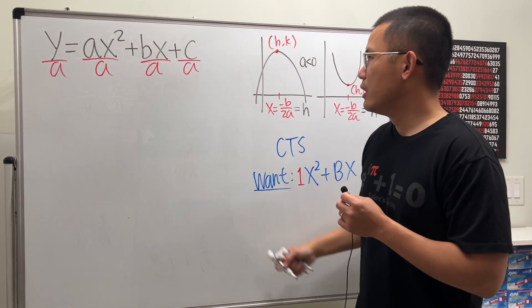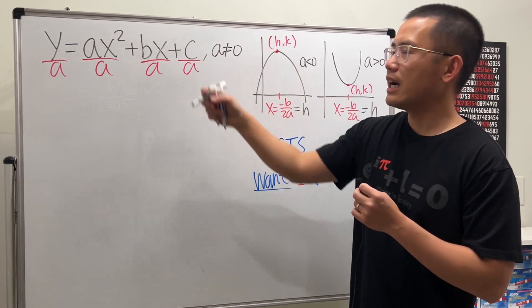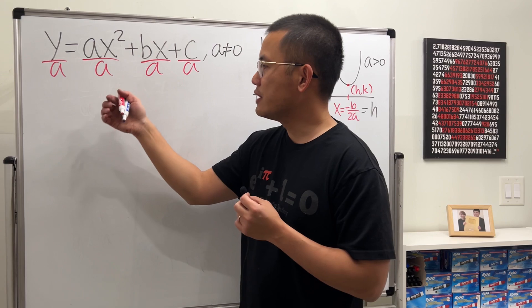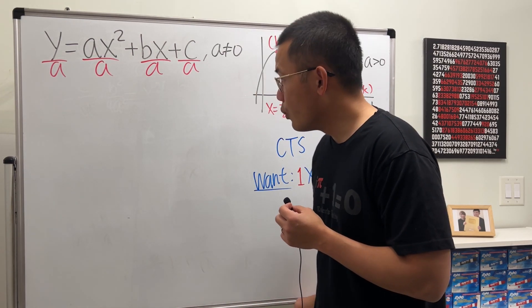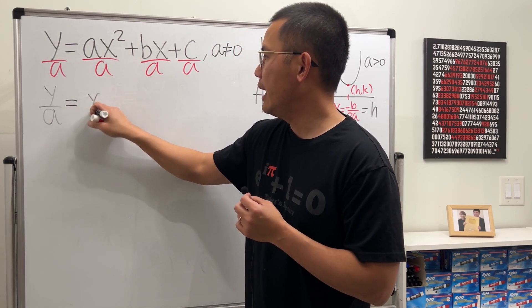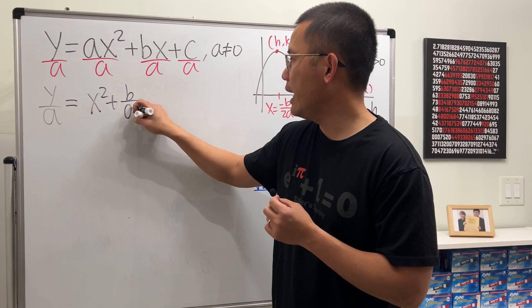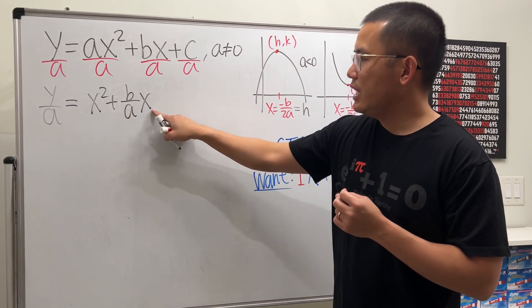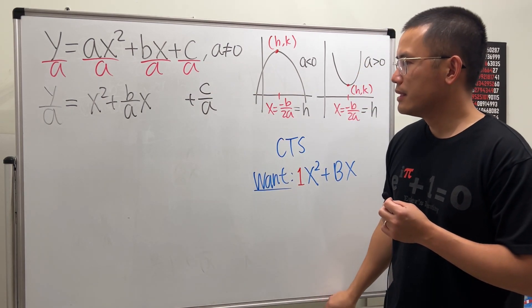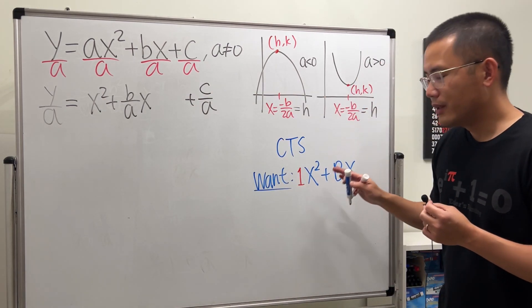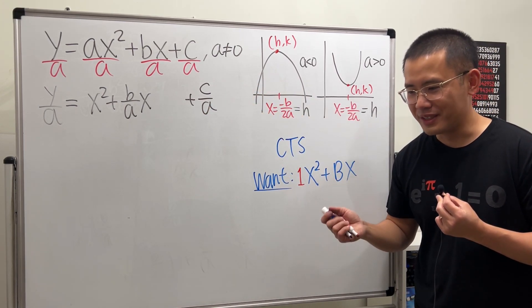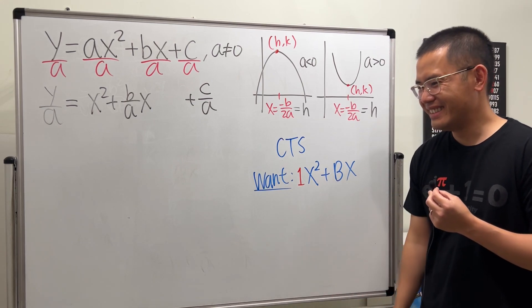And of course, right here, a is not equal to 0 because otherwise we couldn't even have a quadratic equation in the first place. So just divide. And then here we will have y over a equals this is now x squared plus this is b over a x. Leave a space. And then right here continue with plus c over a.